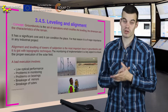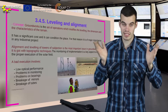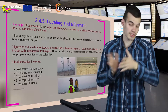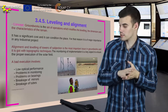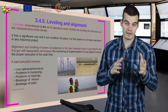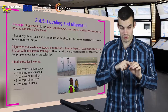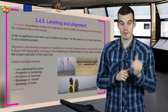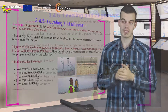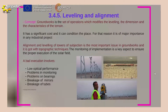Additional problems from poor groundworks include: problems in monitoring, that is in the control system and the tracking system; problems on bearings which help in the movement of the parabolic trough; and the fracture of mirrors and tubes. So in general the overall performance of our plant is going to be decreased.